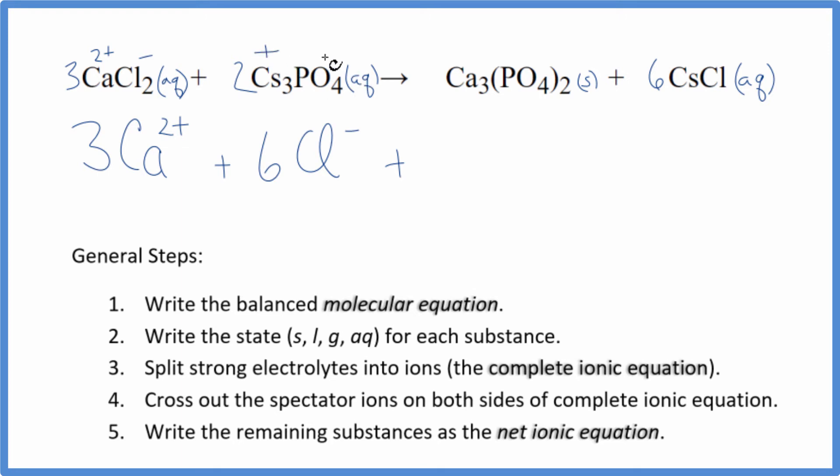Then we said we're going to treat this as aqueous. Cesium's in group one, it has a one plus ionic charge. The whole phosphate, three minus. Good one to remember. Two times three, so we have six of these cesium ions, and then we have two of the phosphate ions.